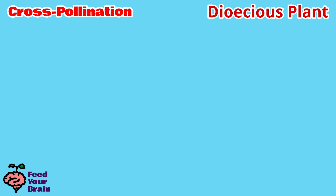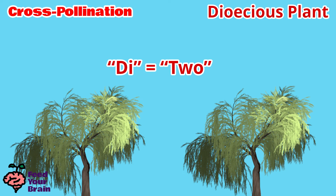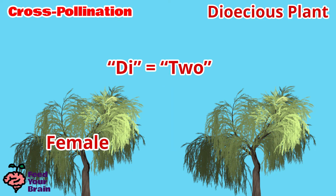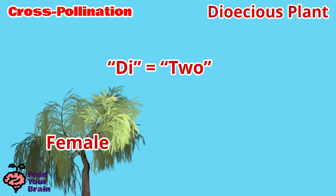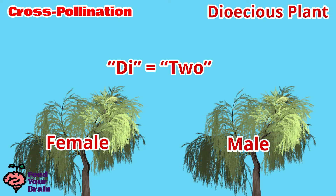Now let's look at dioecious plants. 'Di' is the Greek prefix meaning two, so with dioecious plants you need two separate plants for pollination. Female flowers only grow on one plant, and male flowers only grow on one plant. Because fruit and seeds only grow from a female flower's ovary, if you have a female dioecious plant, you'll need a male dioecious plant nearby.